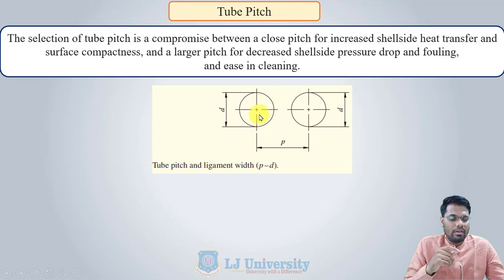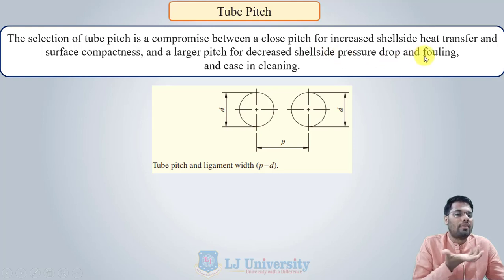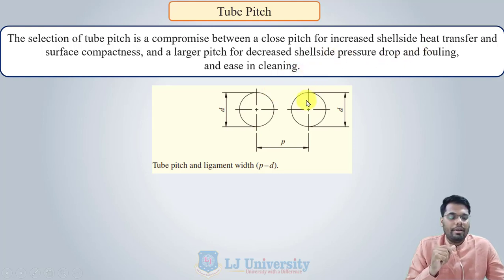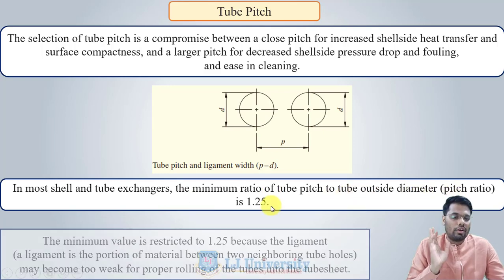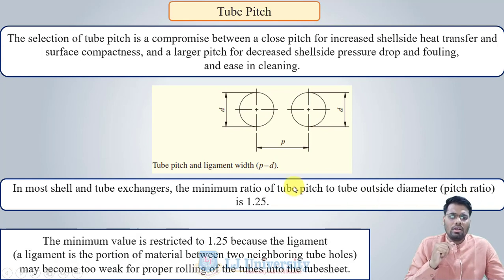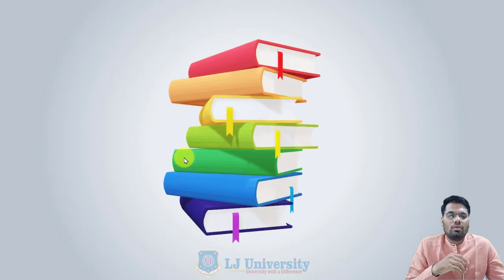Tube pitch is the center-to-center distance between two adjacent tubes. Selection of tube pitch is a compromise: a close pitch increases shell side heat transfer and surface compactness, while a larger pitch decreases shell side pressure drop and fouling and eases cleaning. In most shell and tube heat exchangers, the minimum ratio of tube pitch to tube outside diameter is 1.25, because the ligament — the portion of material between two neighboring tube holes — may become too weak for proper rolling of the tube into the tube sheet if the pitch is smaller.